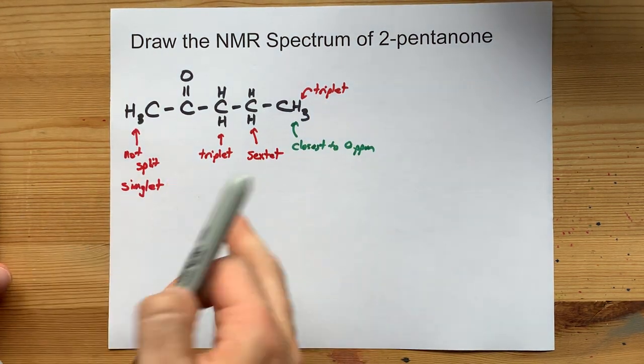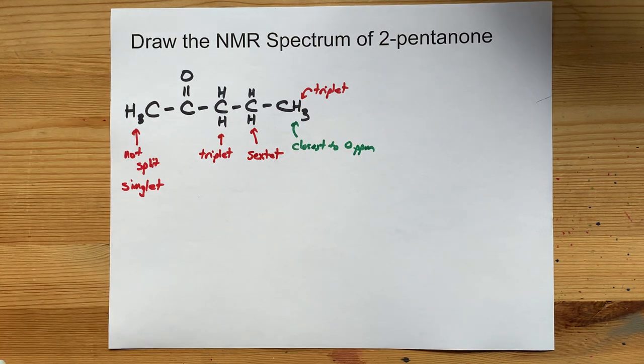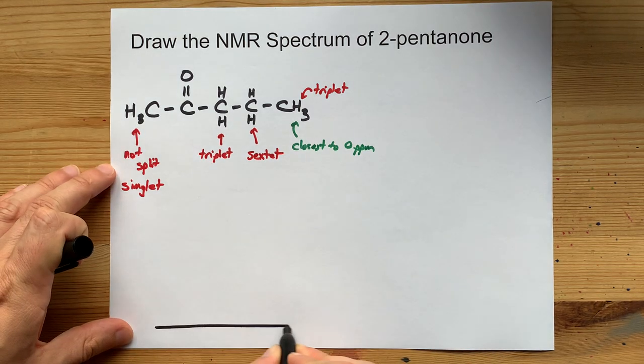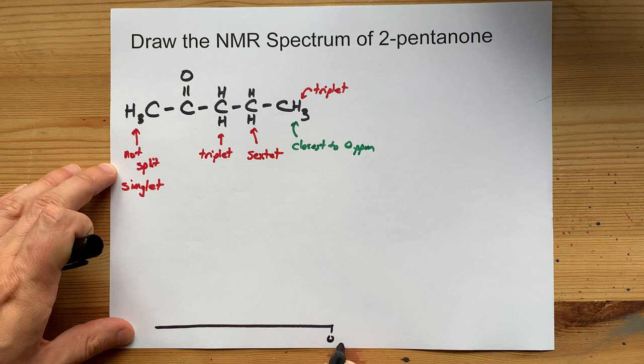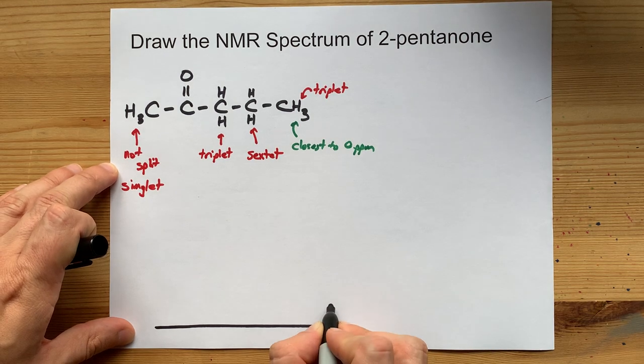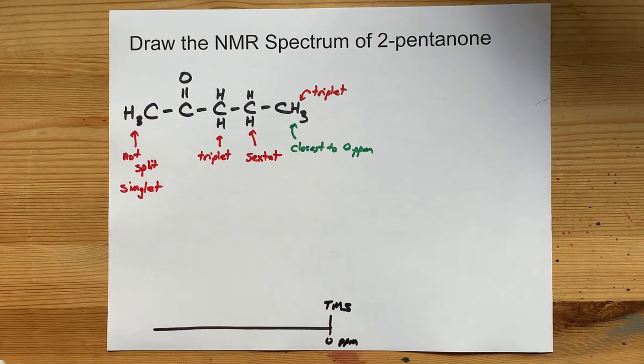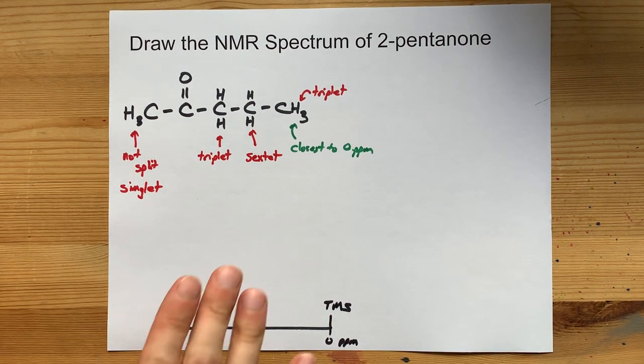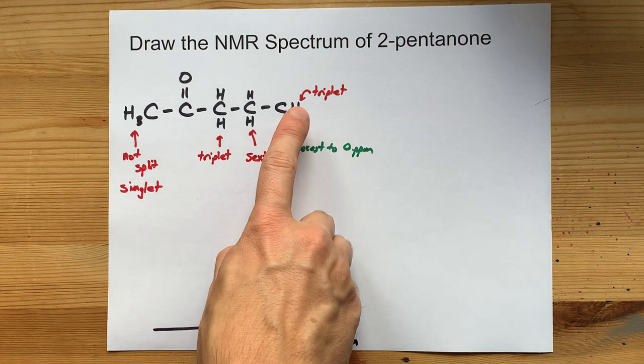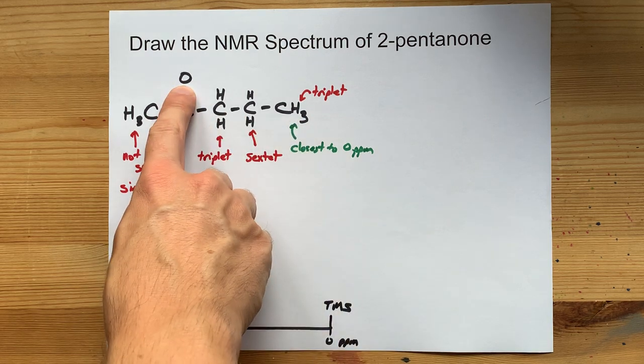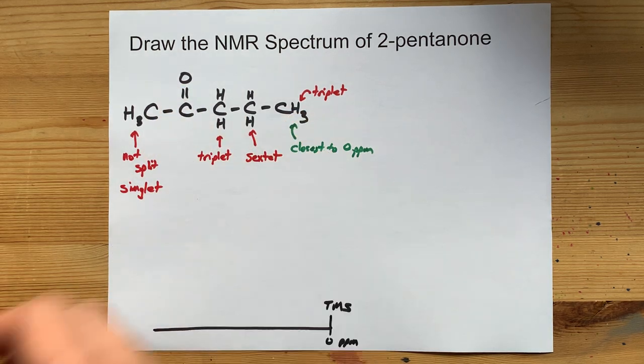Now, I'm going to start with the low-resolution NMR spectrum just to give you a feel for what's happening here. If I start at zero ppm, I can put a little thing there for TMS or tetramethylsilane. That's our standard. Now, the farthest away you are from the electronegative atoms, those are the closest to zero.